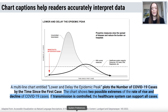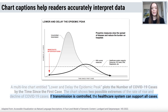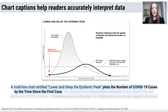These differences in semantic content are important in deployed chart captioning systems, where different users may have different preferences. For instance, high-level captions can help users properly interpret the chart's takeaways, while low-level captions can help blind readers extract visual information.